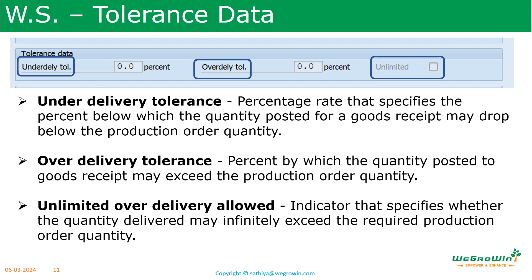Then we have the tolerance details. Under delivery tolerance is the percentage rate that specifies how far below the production order quantity the goods receipt quantity may drop. Over delivery tolerance is the percentage by which the goods receipt quantity may exceed the production order quantity. Unlimited means the indicator specifies whether the quantity actually delivered may infinitely exceed the required production order quantity. The normal suggestion is to have around 5 or 10 percent for over delivery, and it is suggested not to use the unlimited indicator — there should always be some limit.